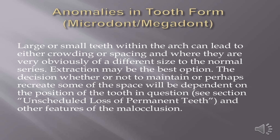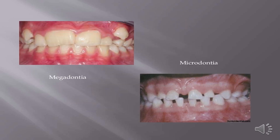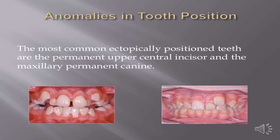Extraction may be the best option for anomalous teeth. The decision whether to maintain or recreate space will depend on the position of the tooth in question and other features of the malocclusion. Megadontia and microdontia are tooth size anomalies to consider. The most common ectopically positioned teeth are the permanent upper central incisor and the maxillary permanent canine.